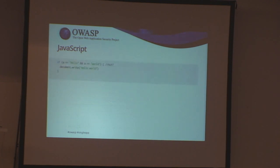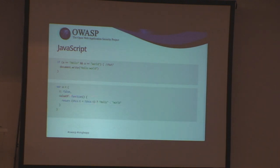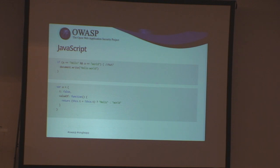Also, we can do things like this: A equals 'hello' and A equals 'world', and it will actually do this. How is that possible? Well, we can define an object that has a valueOf function, and the valueOf function is used here. So this will alternately return 'hello' and 'world'. This is a trick I learned from watching a presentation by Douglas Crockford, the guy behind JavaScript.